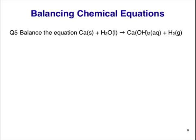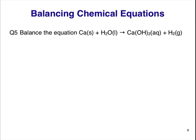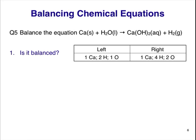Question 5. Balance the equation Ca plus H2O making Ca(OH)2, calcium hydroxide, plus H2. Pause the video here and work out the answer. First, we'll count the atoms in the given equation. Be careful — on the right side of the arrow, H appears in two substances, so we must count all H atoms on the right. On the left, we have 1 Ca, 2 H, and 1 O atom. On the right, we have 1 Ca, 4 H, and 2 O atoms. The equation is not balanced. Both H and O are unbalanced.